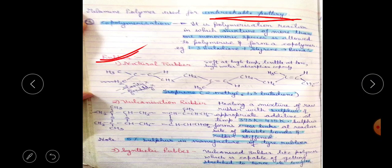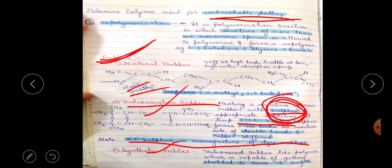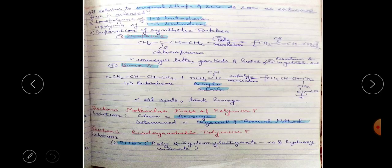Natural rubber on its own does not have good elasticity and flexibility, but when 5% sulfur is added, natural rubber converts to synthetic rubber (vulcanized rubber) with much better elasticity, flexibility, and higher temperature tolerance. This vulcanization process is a very important exam question. Neoprene, Buna-N, and Buna-S are all synthetic rubbers — not natural rubber. Buna-N is used for oil seals and tanks.